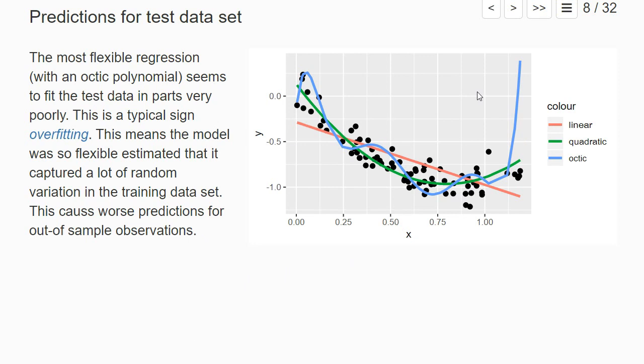Of course, we do not always want to assess the out-of-sample prediction accuracy by looking at graphs. There are also formal mathematical criteria like the mean absolute error or the root mean squared error, which I